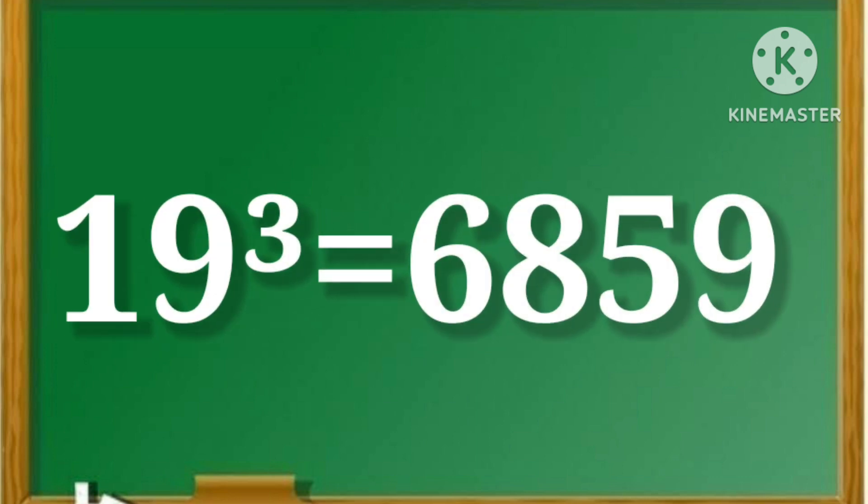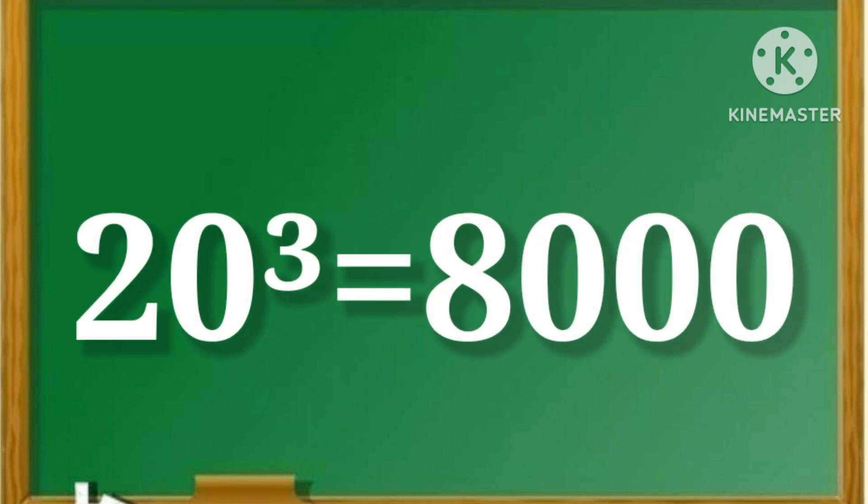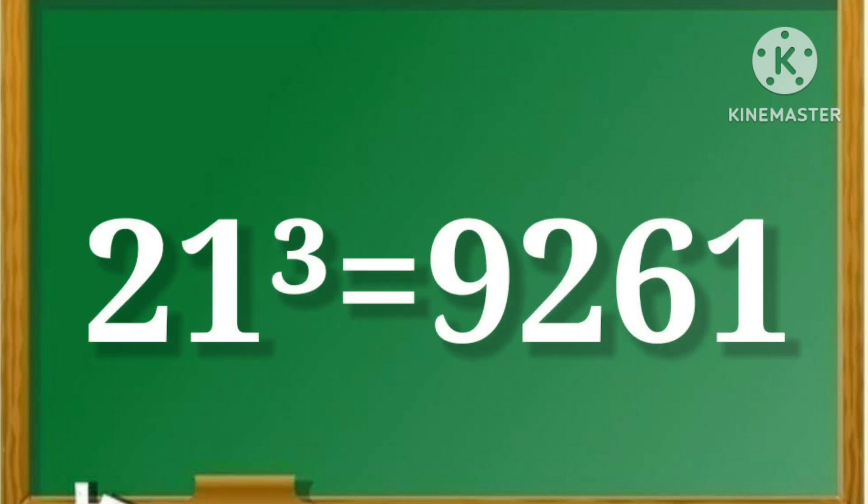19 cube is equal to 6859. 20 cube is equal to 8000. 21 cube is equal to 9261.